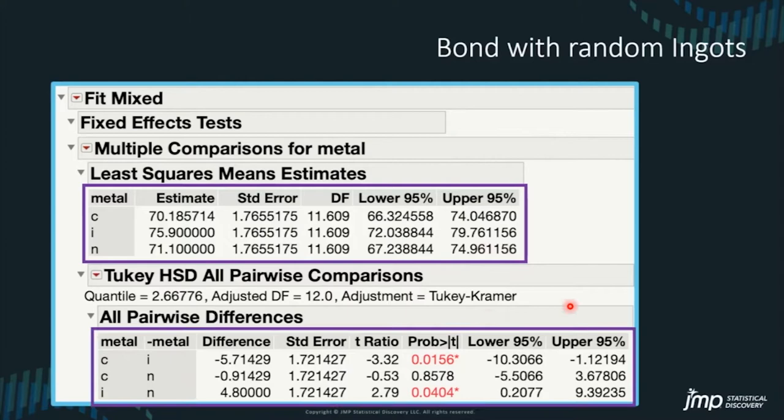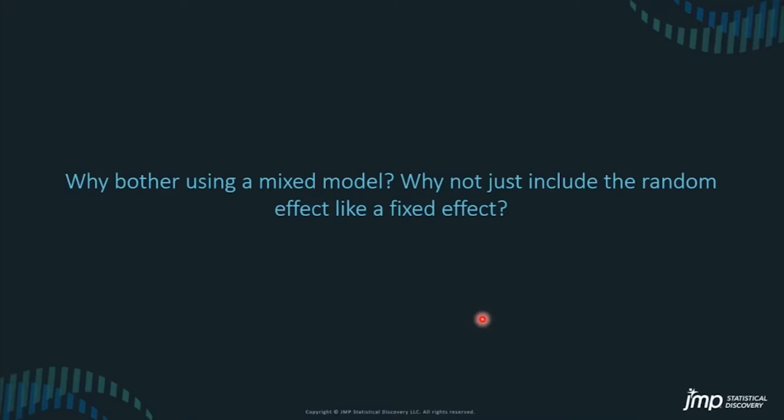We also have confidence intervals — because it's not just about the mean, it's about the variation — and pairwise differences. I used the Tukey-Kramer adjustment for multiplicity here. With only three treatments, it may not have done much in this case, but it's something to bear in mind to control the false discovery rate.